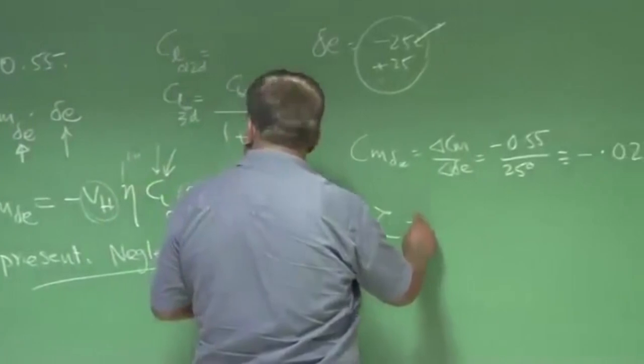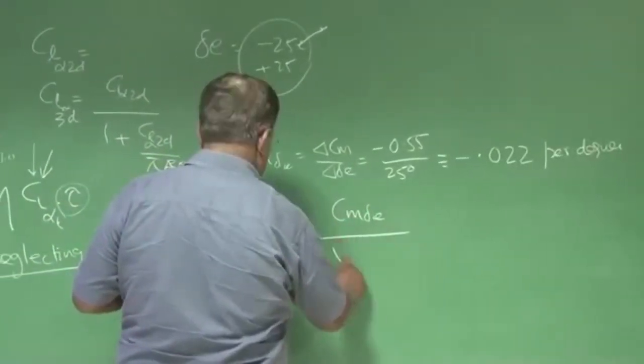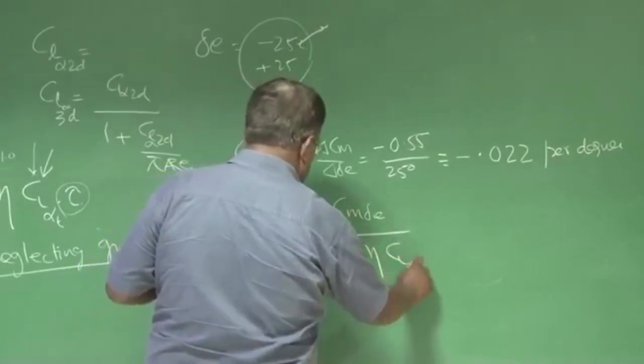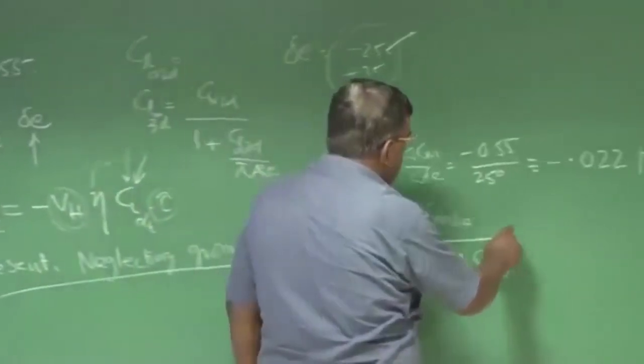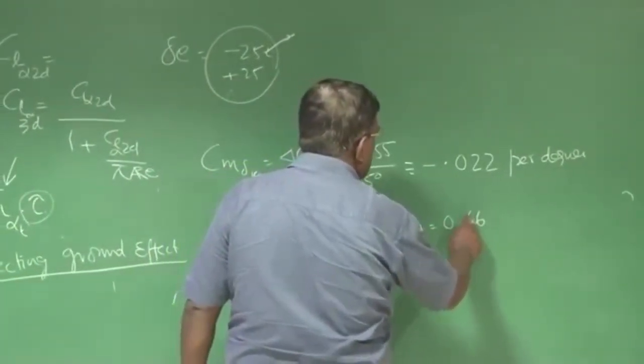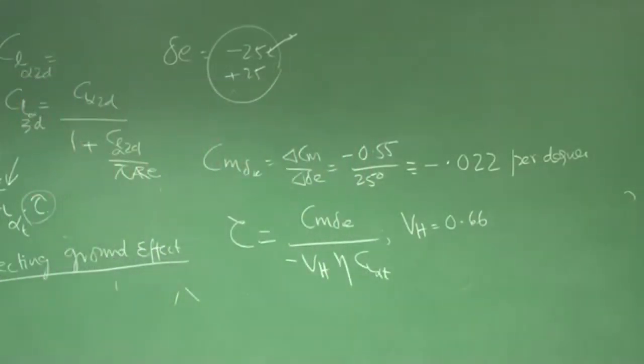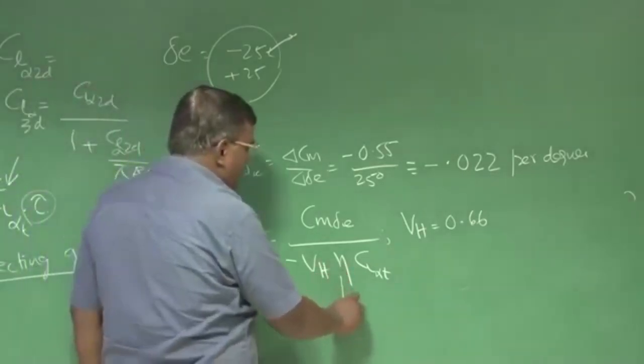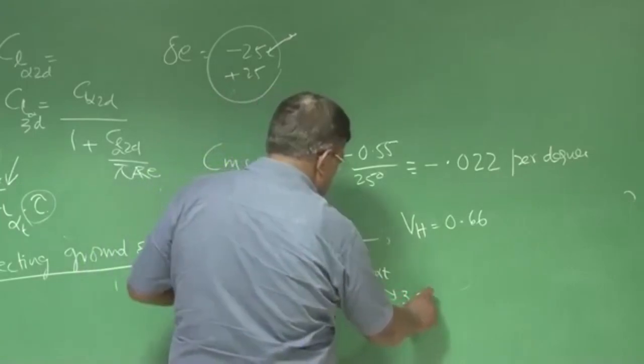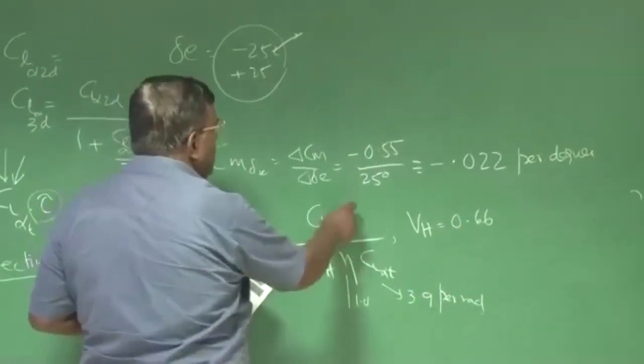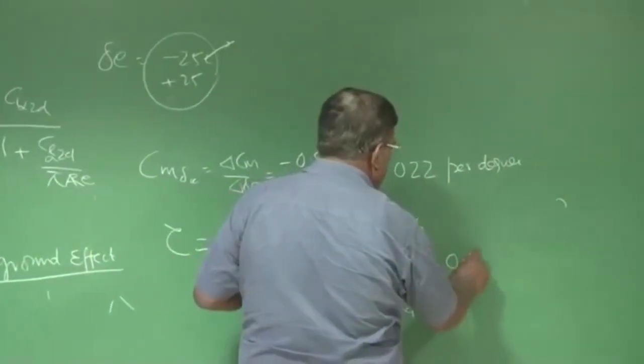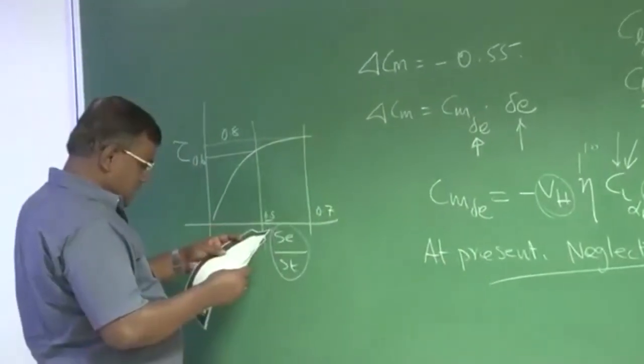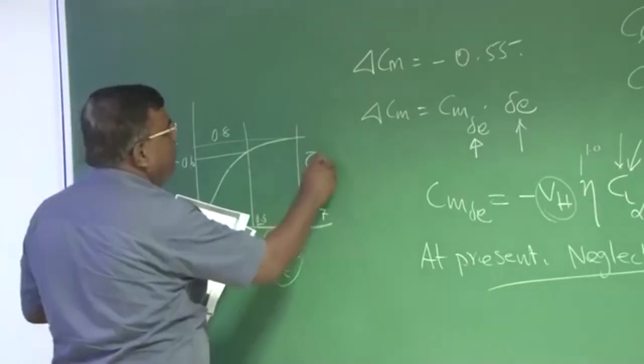So if I know CM_delta_E, then I can easily find out tau equals CM_delta_E divided by V_h times eta times CL_alpha_tail from here. And let us say when you have conceptualized V_h, then V_h you have taken around 0.66, these are some numbers which could be 0.5, 0.6, 0.7. So you have taken 0.6 and this gentleman is 1 and let us say this is around 3.9 per radian, and CM_delta_E also you have to put in per radian, and if you put that you will find tau will come around 0.5 roughly.